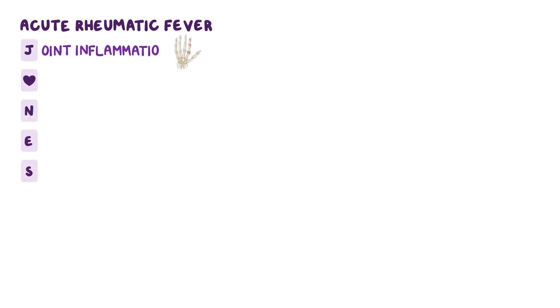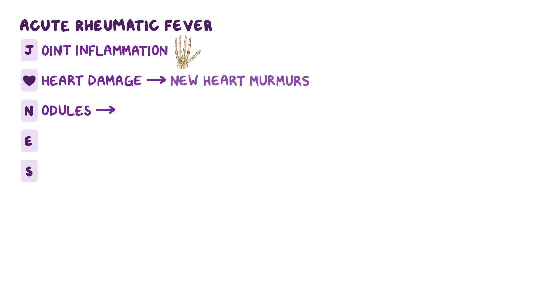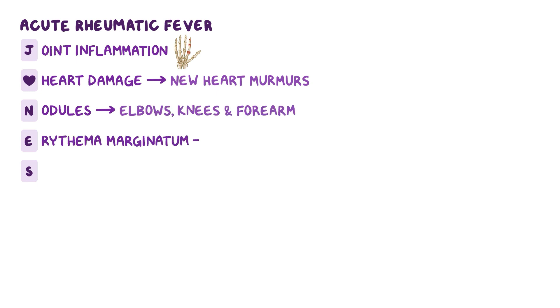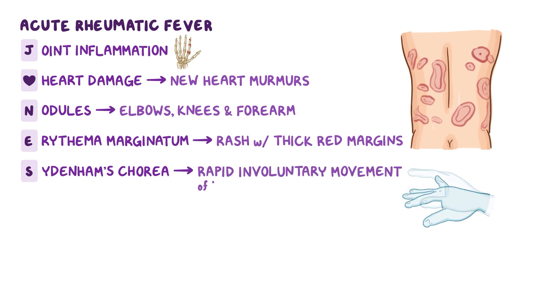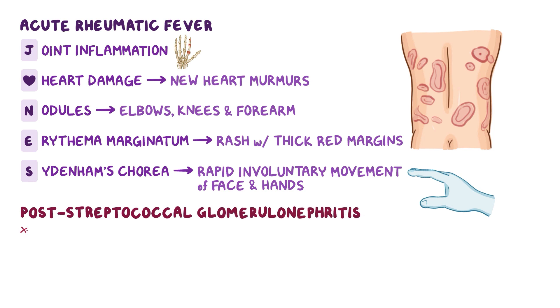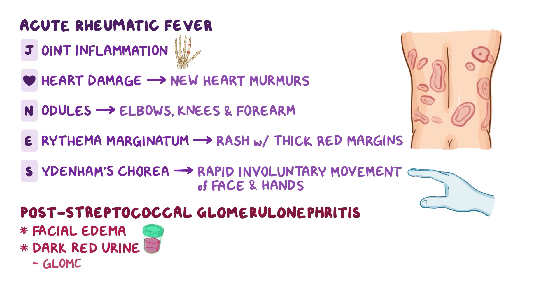With acute rheumatic fever, there's a mnemonic for the symptoms: JONES. J is for joint inflammation, O is for heart damage that causes new heart murmurs, N is for subcutaneous nodules typically seen on the elbows, knees, and forearm, E is for erythema marginatum — a rash with thick red margins, and S is for Sydenham's chorea, characterized by rapid involuntary movement of the face and hands. With post-streptococcal glomerulonephritis, there's mainly facial edema and dark red urine because glomerular damage allows red blood cells to pass into the urine.